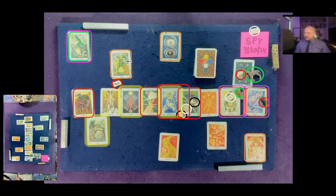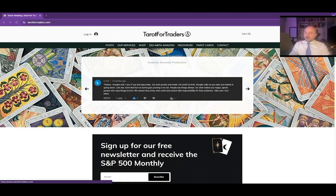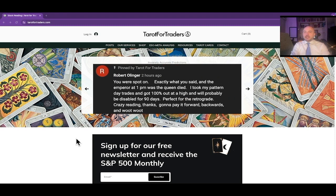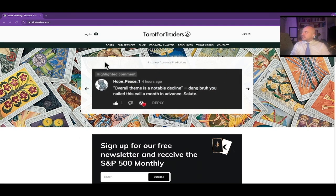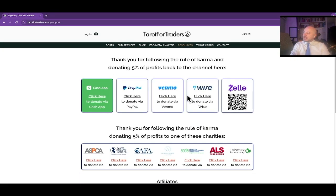Before I go any further though, I want to make sure everybody's aware of the whole purpose of the channel. The whole purpose of the channel is to transmute some of the competitive energy of the stock market into goodwill. We do that by following the rule of karma for the channel. You go to the resources tab of our website, Tarot for Traders, and 5% of the profits from every profitable trade utilizing this information should be donated forward to one of these charities or pick a charity of your choosing. And then 5% should be sent back to the channel through one of these links.